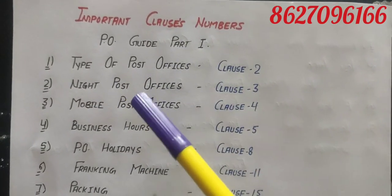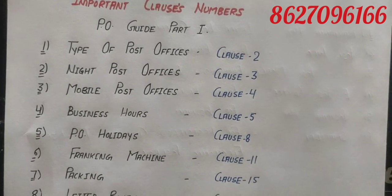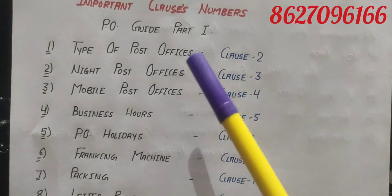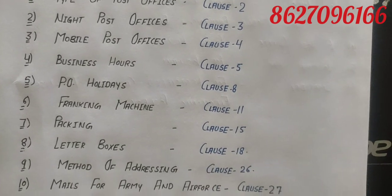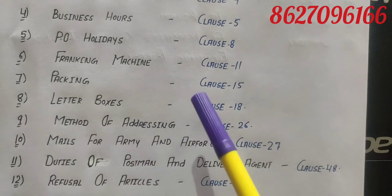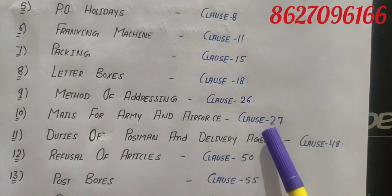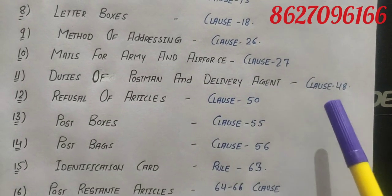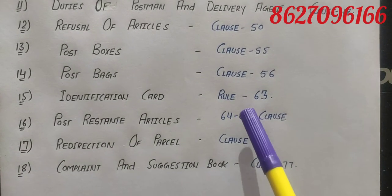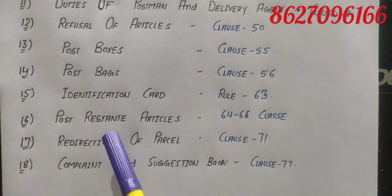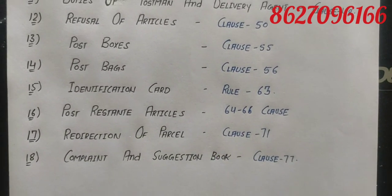Now we will see some important close numbers asked in the exam from the Post Office Guide. Close 2: type of post office which closes mails. Close 3: night post offices. Close 4: mobile post offices. Close 5: business hours. Close 6: post office holidays. Close 8: franking machine. Close 11: packing. Close 15: letter boxes. Close 18: method of addressing. Close 26: mails for army and air force. Close 27: duties of postman and delivery agent. Close 48: refusal of articles. Close 50: post boxes. Close 55: post bags. Close 56: identification card. Close 63: post addressant articles. Close 64-66: reduction of parcels. Close 71: complaint and suggestion book. Close 77.